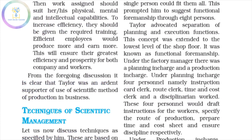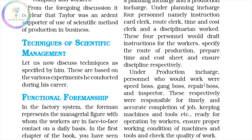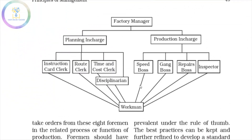That concludes the principles of scientific management. Now we move to the techniques of scientific management. The first technique is functional foremanship. In functional foremanship, a workman has eight supervisors — eight foremen — rather than one foreman.